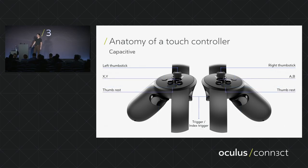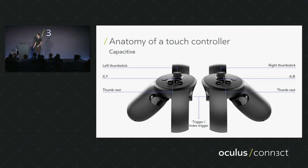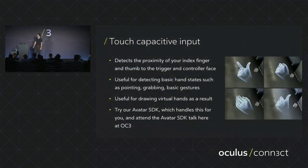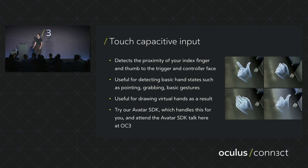Next is capacitive inputs. Capacitive inputs indicate the touch of your fingers on the controller as opposed to button pressing. In fact, the capacitance is why we call this a touch controller. The capacitance inputs include thumbstick, A, B buttons, and the index trigger. You can detect gestures such as pointing, grabbing, and basic hand states. You can draw virtual hands as a result, and if you want, you can try our avatar SDK, which handles some of this for you — it's the next talk after this one.